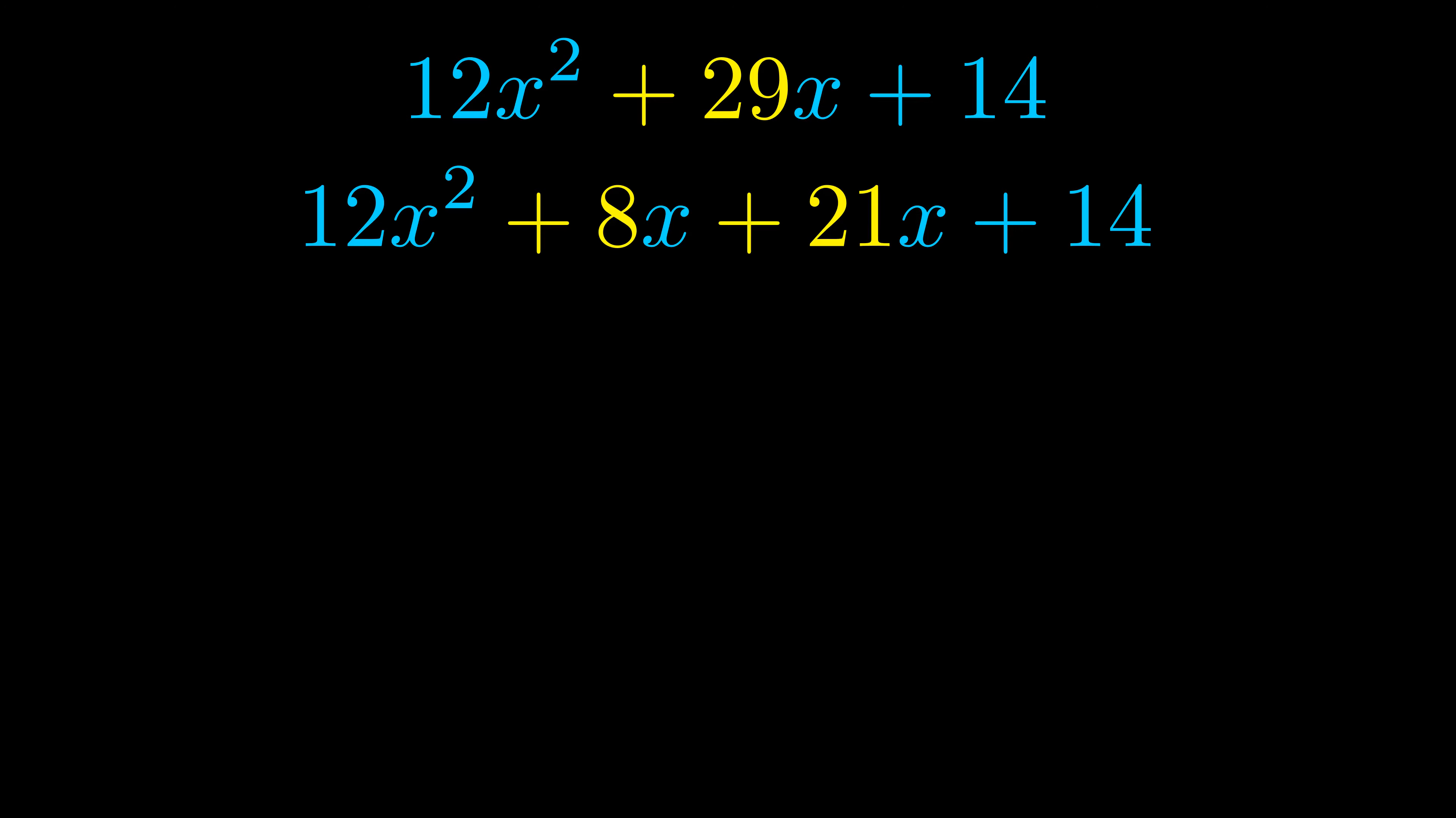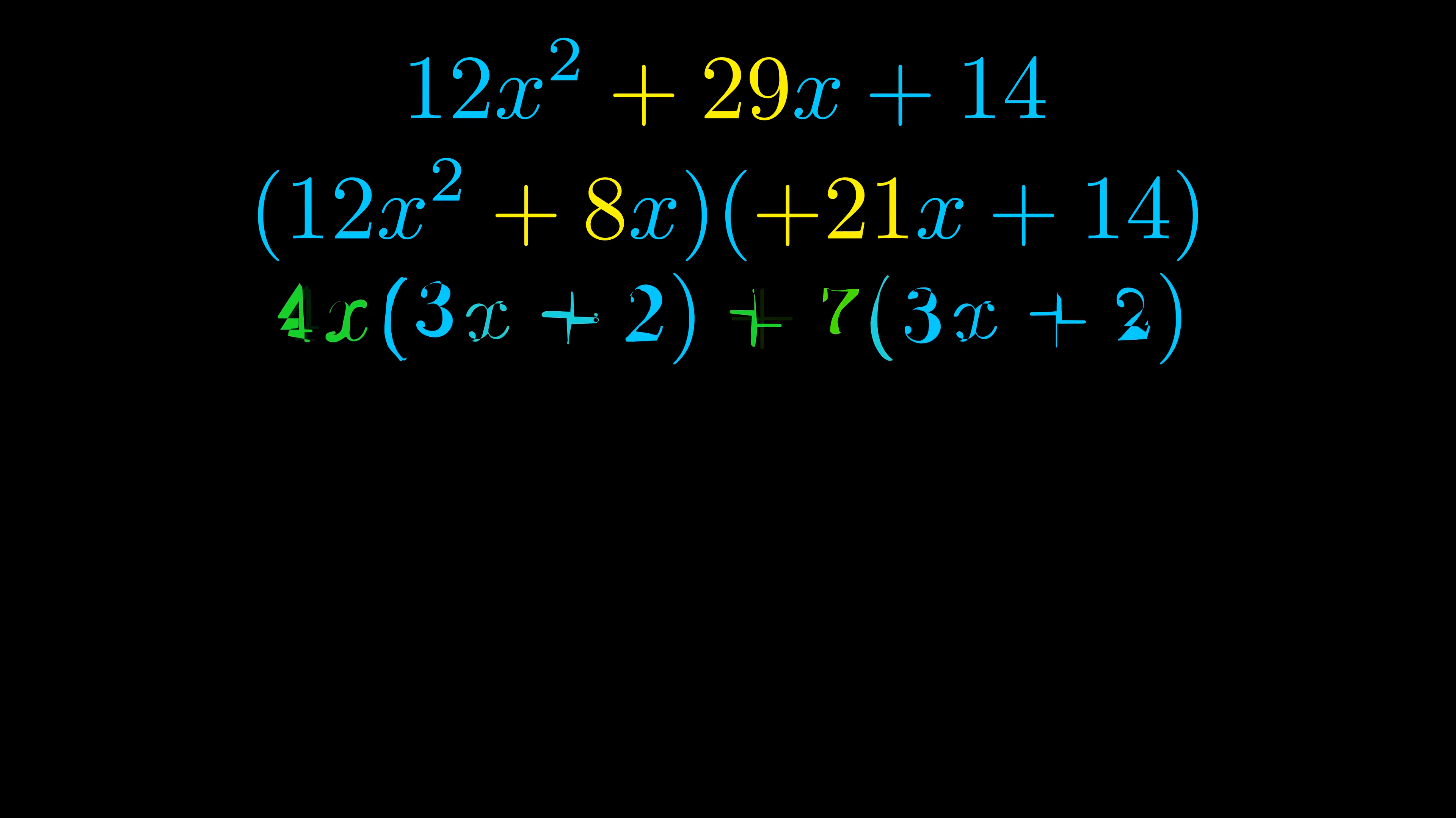Once we've done this we go ahead and we put parentheses around the first term and the last term and we do that so that we can take the greatest common factor out of both terms. We can see the greatest common factor is now outside in green.